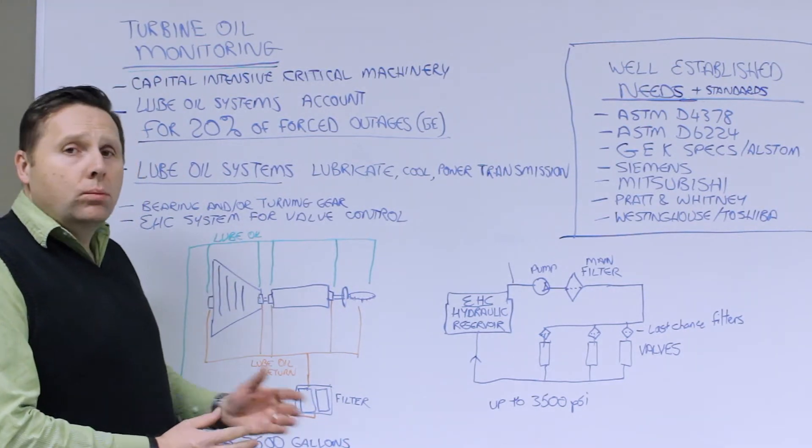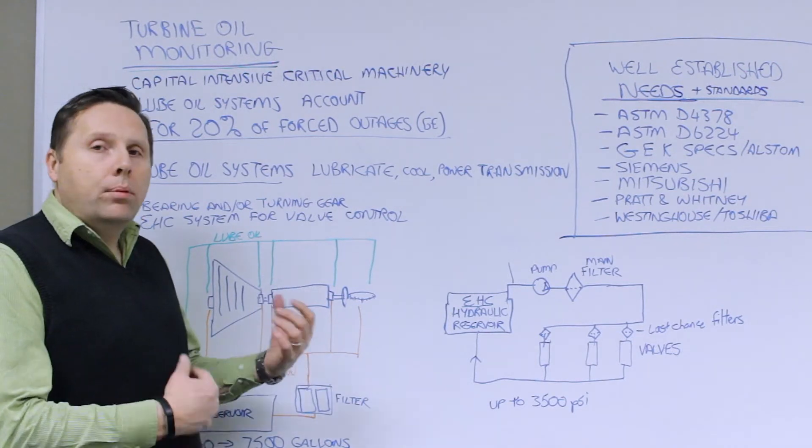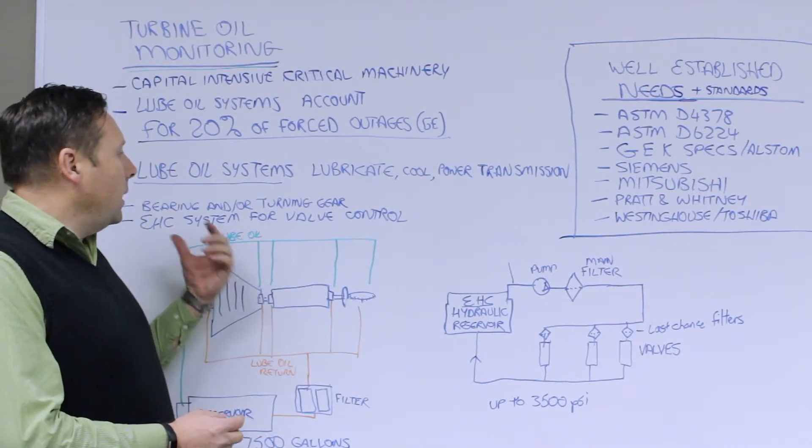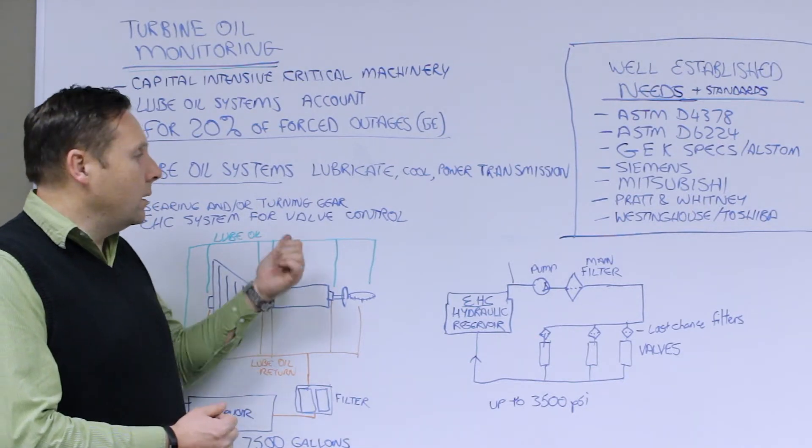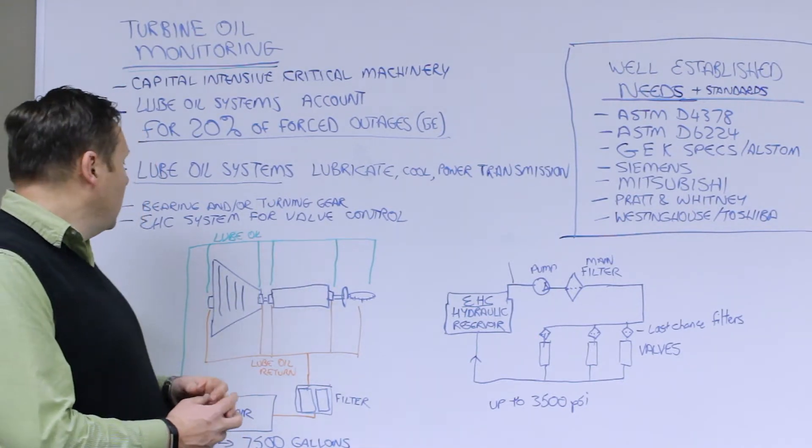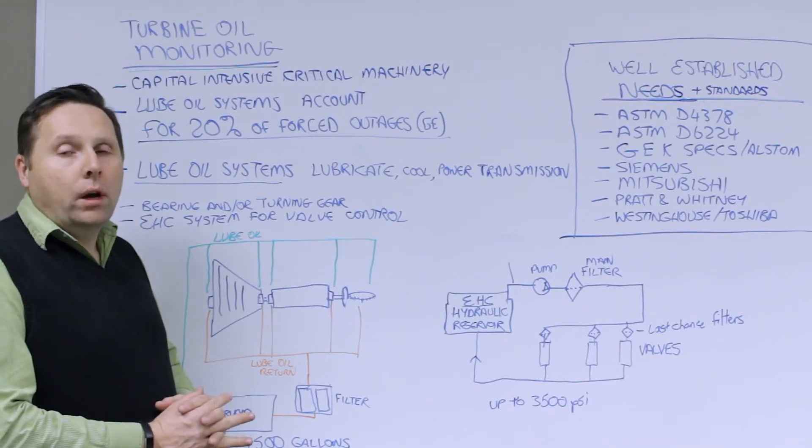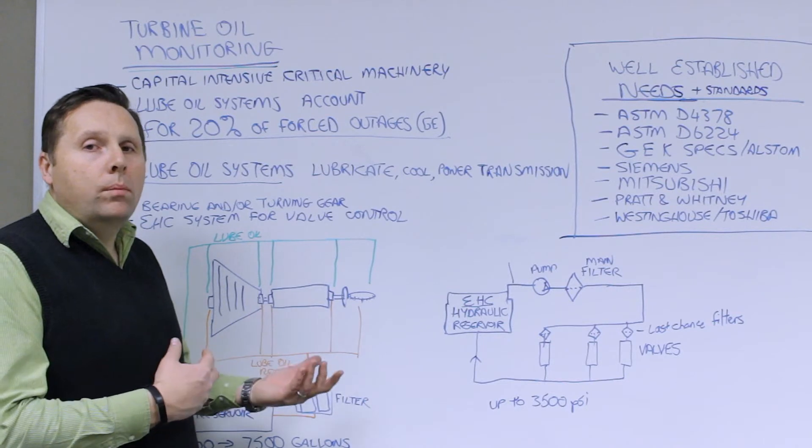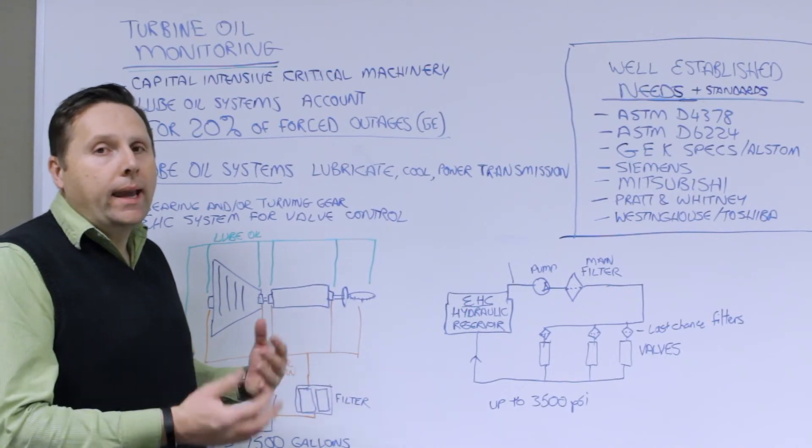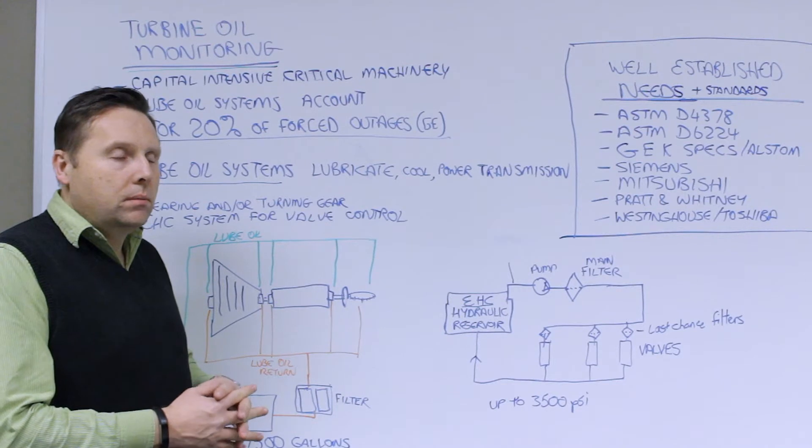Lube oil systems lubricate, they cool, they provide for power transmission in the systems. They are taking care of the bearings, lubricating and cooling bearings, as well as turning gear on some designs. Also we have electro hydraulic control systems for the valve control. We're talking about both steam turbine and gas turbine systems that are used in power generation systems.